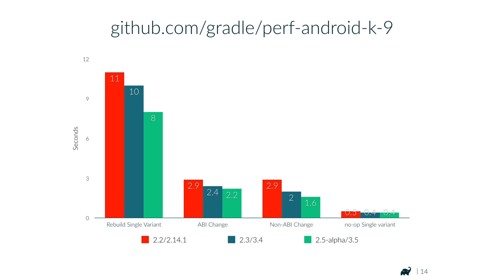Incremental compile is kicking in here since we're not using annotation processors, but it's not having a strong effect because we changed a class that has a lot of coupling and is causing the recompile of many other classes — we did this deliberately to avoid showing only the most optimal scenarios. The effectiveness of avoidance depends a lot on how your source code is structured and what dependencies it has.